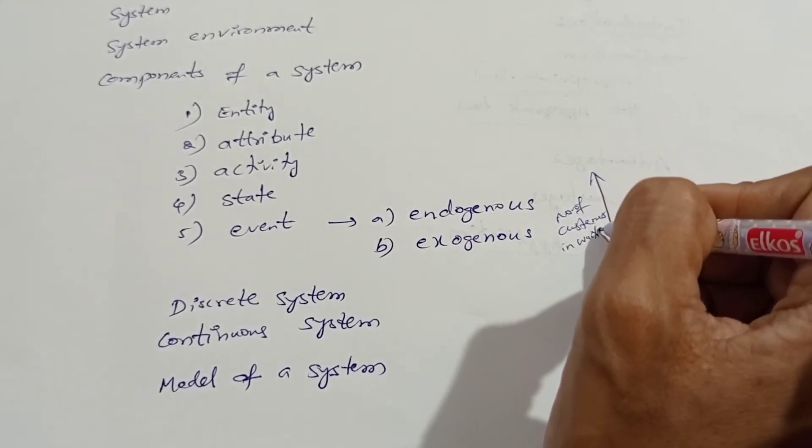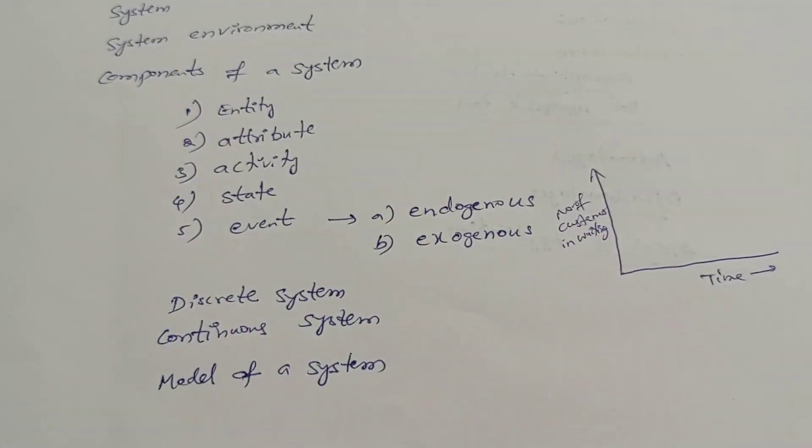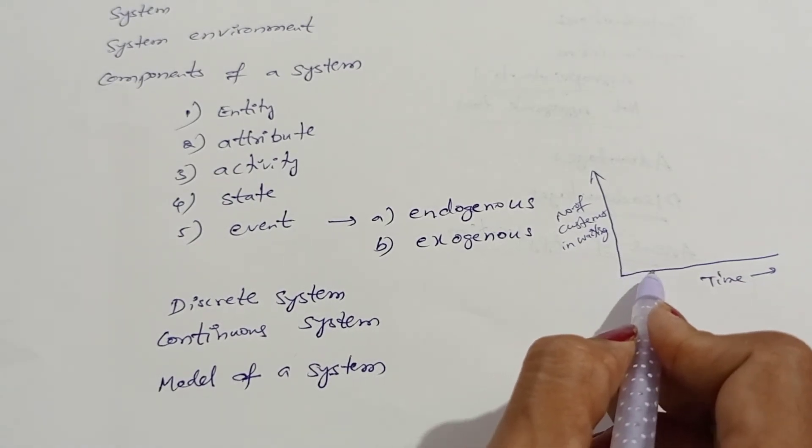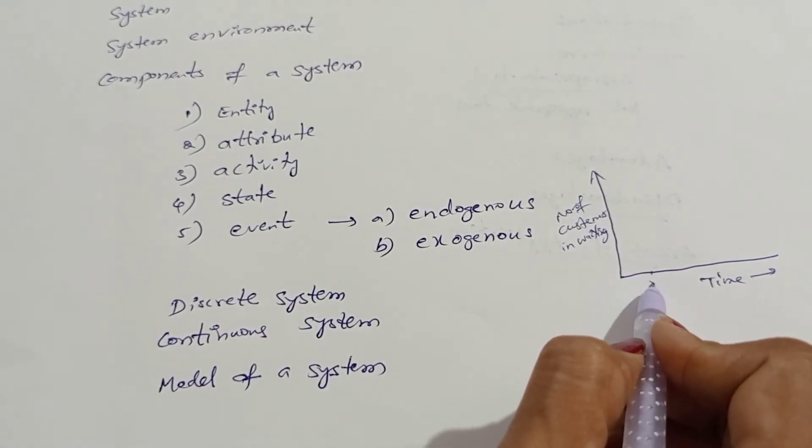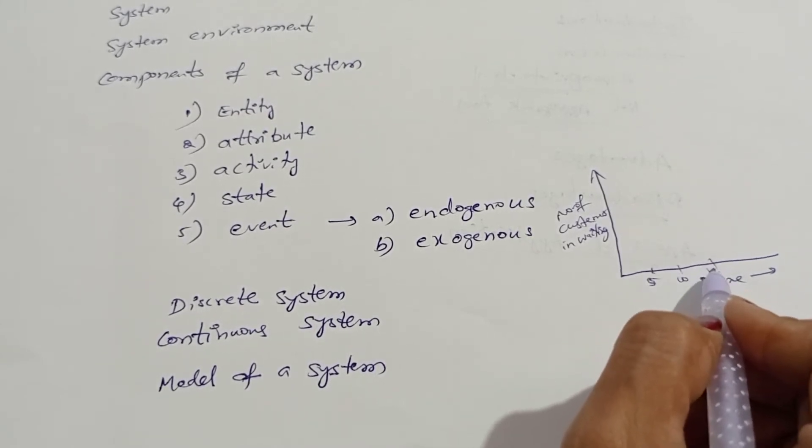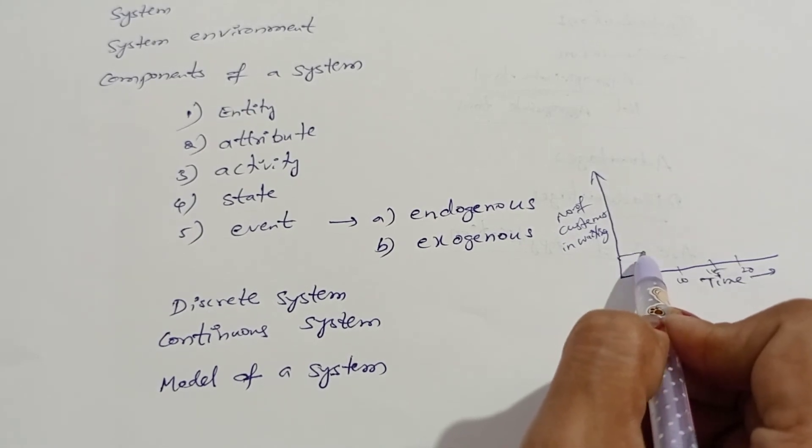Waiting line means when one customer is getting the service, other customers will be waiting. For some specific time intervals: up to 5 minutes, 10 minutes, 15 minutes, 20 minutes. For example, one customer is waiting in line.